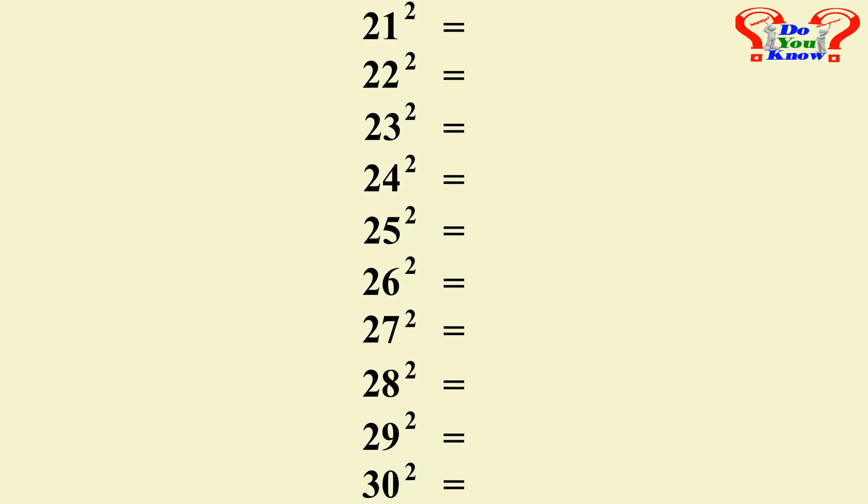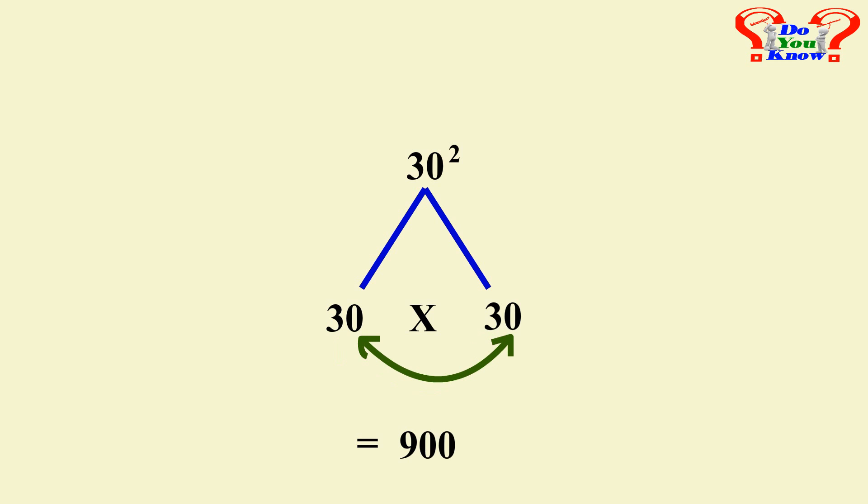Once done, write down the squares of 25 and 30. For 30 squared, it can be calculated as 30 times 30. So it can be 3 times 3, that's 9, and two zeros, that's 900.